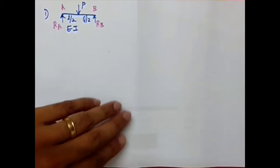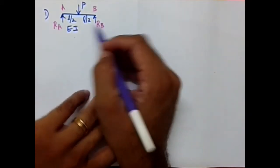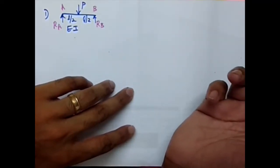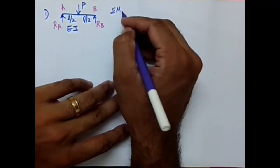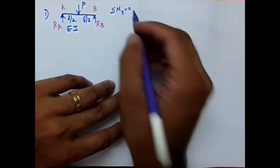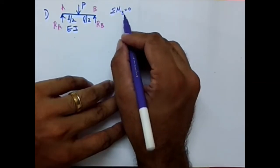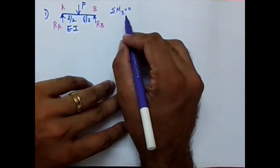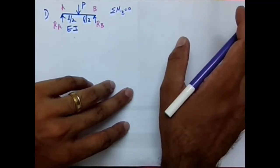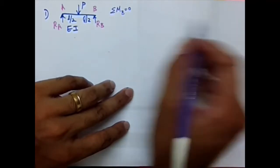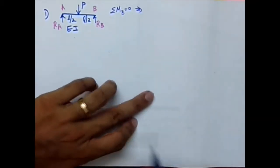Only if we have these values can we calculate the strain energies. The calculation of RA and RB involves the basic conditions from engineering mechanics — the equations of equilibrium. When going with summation of moment (Sigma MB = 0), there is no need to use sagging and hogging sign convention; we can directly use clockwise and anti-clockwise.